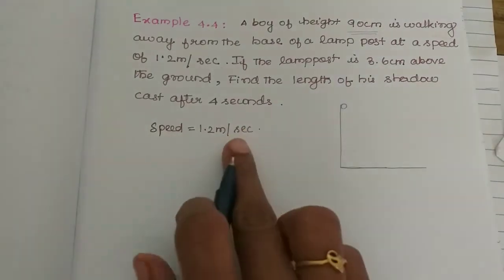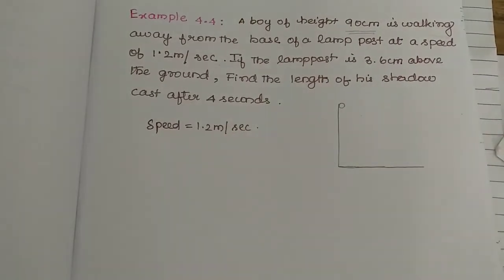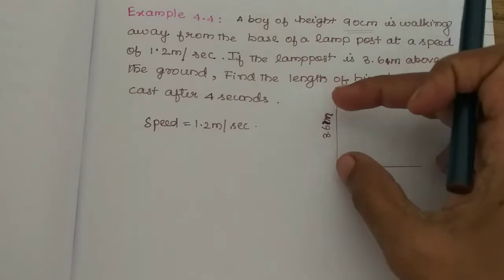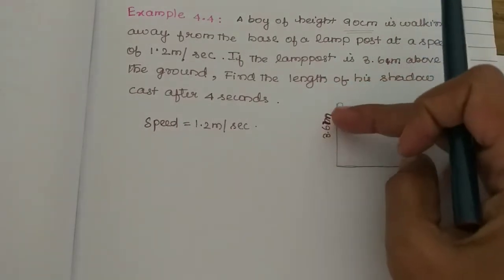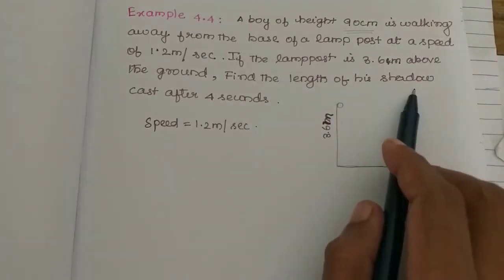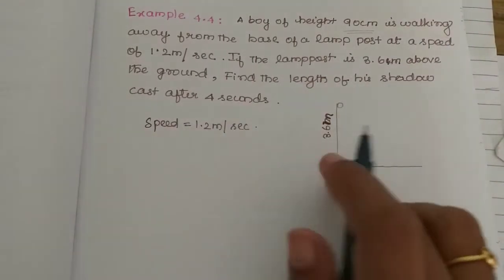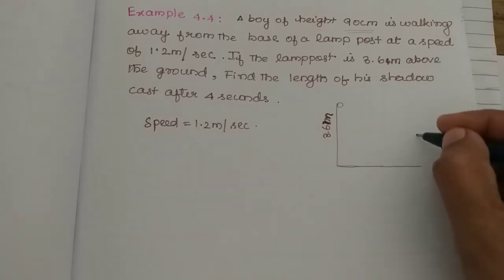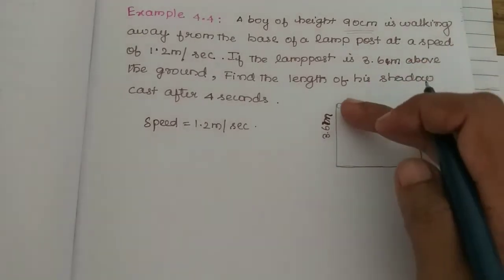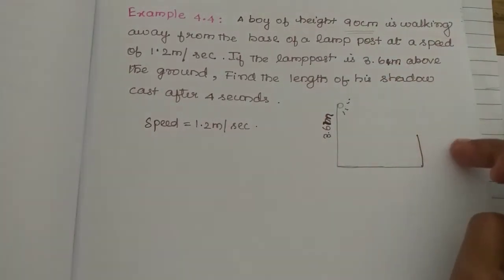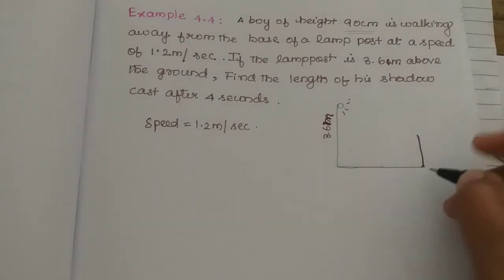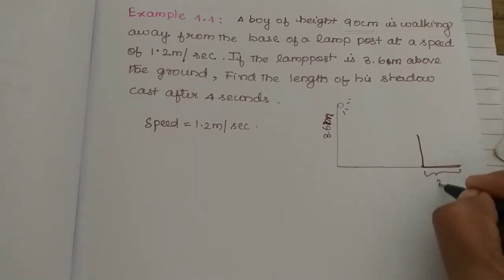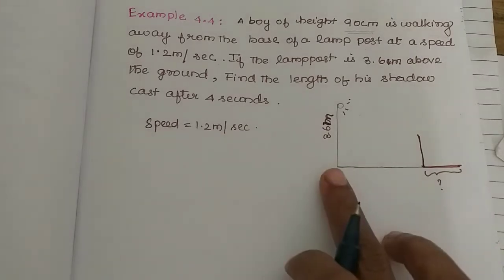For every 1 second, he is walking 1.2 meters away from the base of the lamp post. The lamp post is 3.6 meters above the ground. Find the length of his shadow cast after 4 seconds.